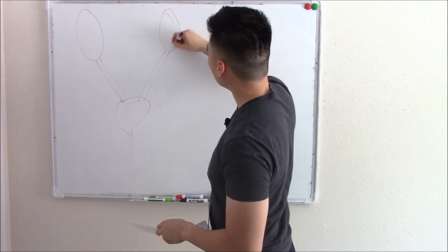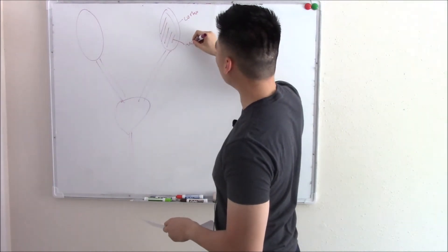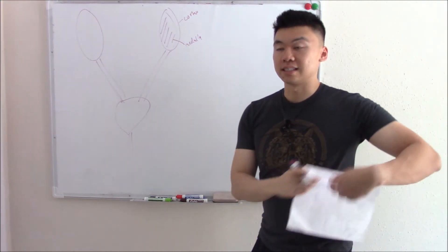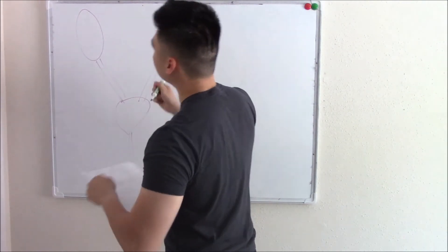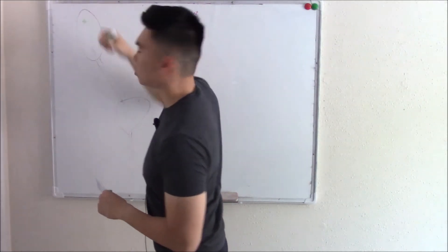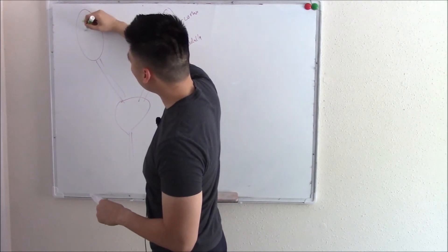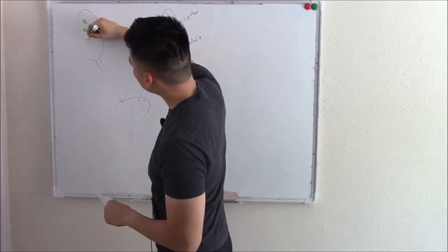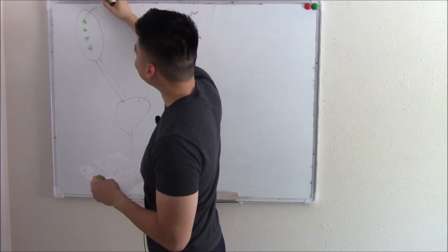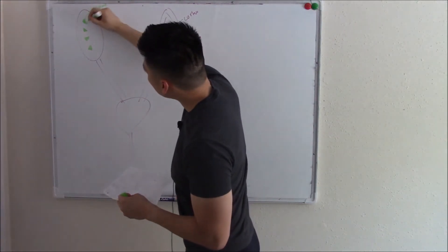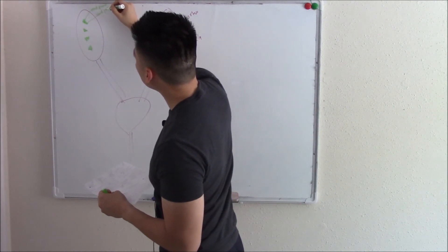The outside of the kidney is called the cortex, and the inner portion is called the medulla. If we take a cross-section of the kidney, it's quite complicated — there are a ton of small tubes that form pyramidal structures called renal pyramids. At the bottom of these pyramids, you have the renal papilla.